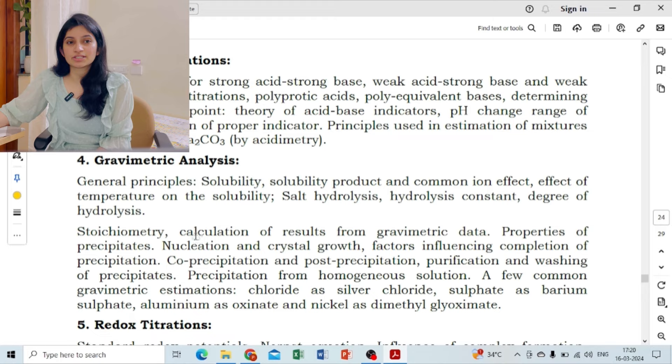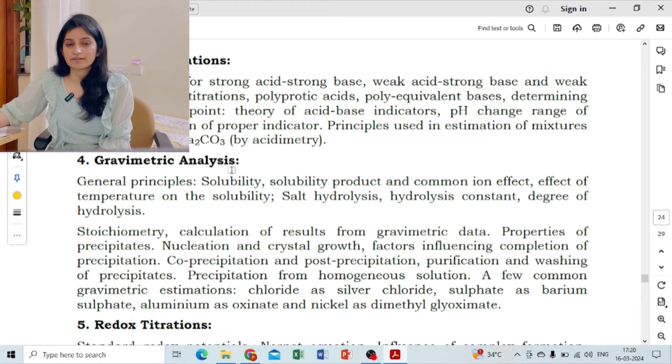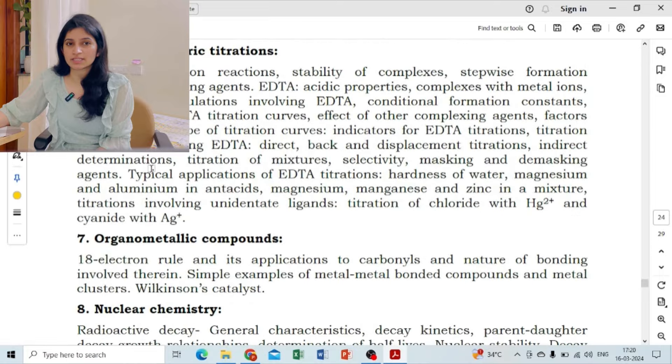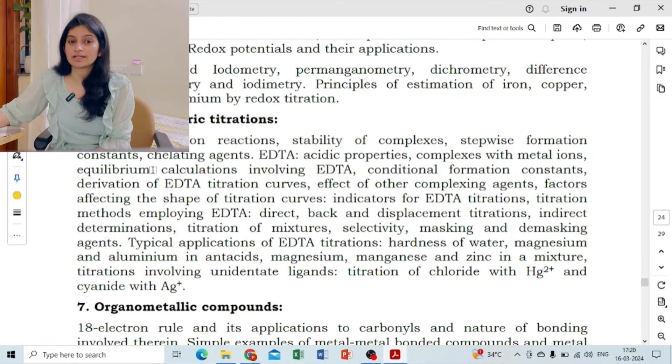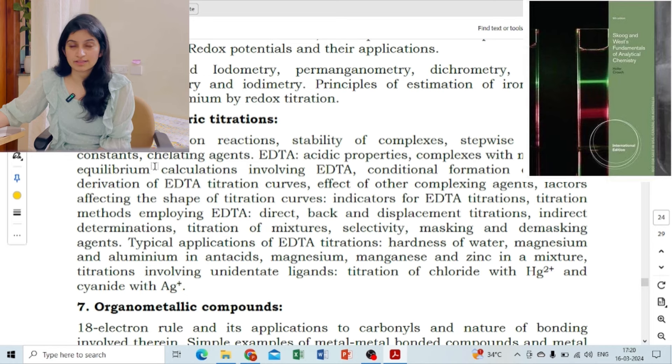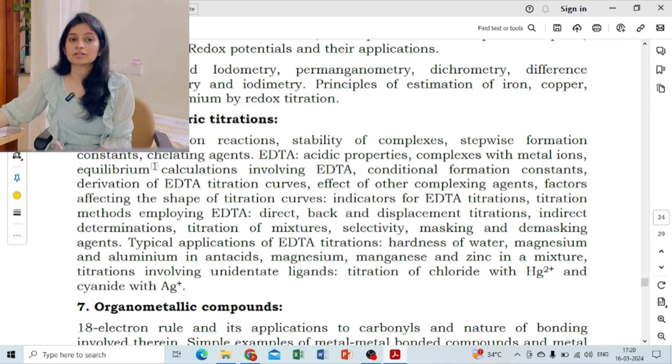Next is acid-base titration. You will get in the book Skoog and West - it is a fundamental analytical chemistry book. So you will get all these chapters and what you need to do most of the things.